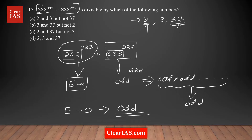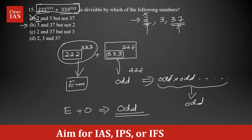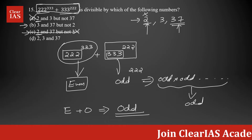We can clearly say the sum of these two numbers is odd and is not divisible by 2. At this stage, try to eliminate the options to save time. Option A says the number is divisible by 2 — eliminate it. Option C also says divisible by 2 — eliminate it. Option D — eliminate it. Option B says divisible by 3 and 37 but not 2, which could be correct.